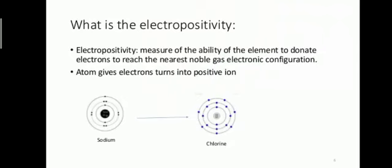For example, sodium has one electron in its outermost shell — it will remove that one electron and become a positive ion. Calcium has two electrons in its outermost shell and will lose those two electrons. Aluminium has three electrons in its valence shell and releases three electrons.